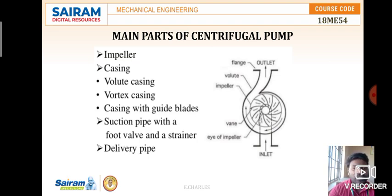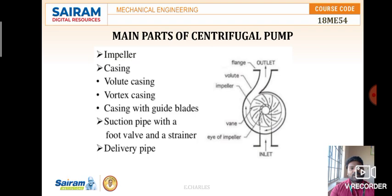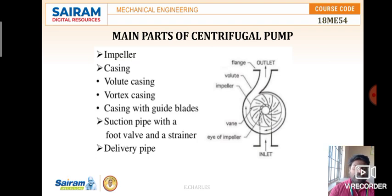The casing provides a housing for the flow of water. Water enters through the inlet, hits the blades, and the casing guides and protects the water to flow in a particular direction so it does not splash out. Based on design, the casing is classified into volute casing and vortex casing. Sometimes fixed guide blades are attached to the casing — these do not rotate but guide the water to flow in the right direction.